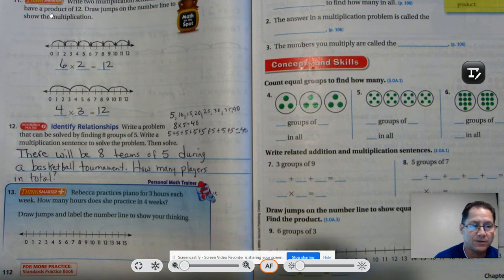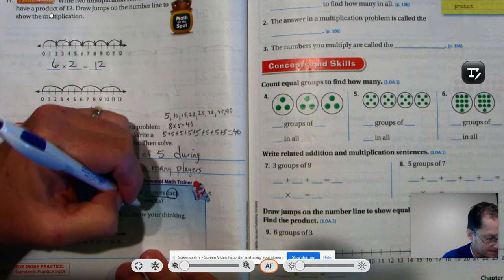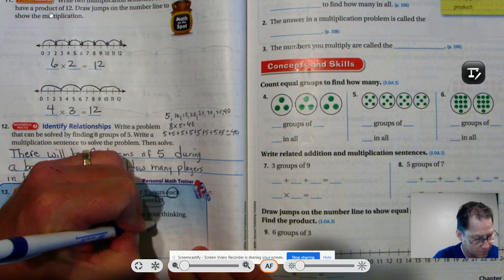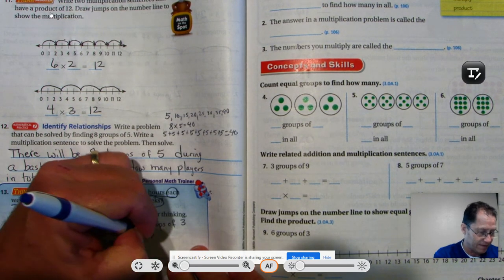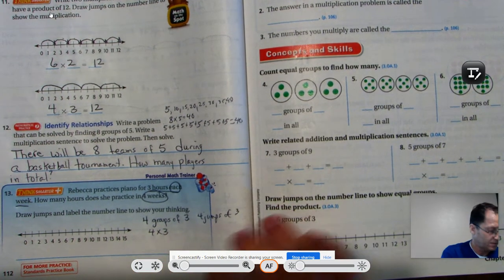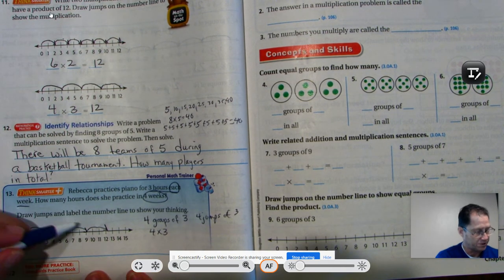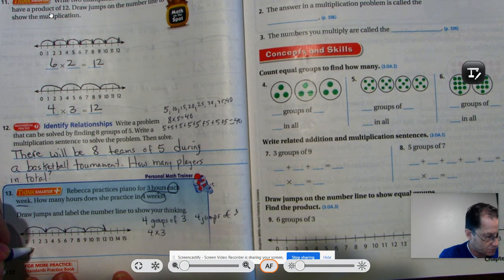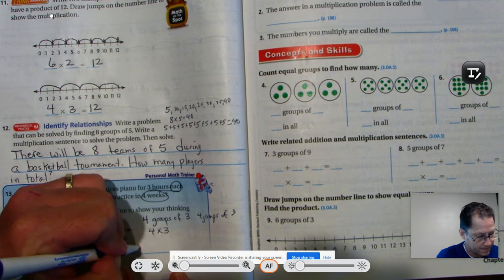Number 13. Rebecca practices piano for 3 hours each week. How many hours did she practice in 4 weeks? So the 4 weeks is our groups here. So we're going to say 4 groups of what? In every week there are 3 hours. So 4 groups of 3 is the same as saying 4 times 3. And it's also the same as saying 4 jumps of 3. So 4 jumps of 3: 1 jump, 2 jumps, 3 jumps, 4 jumps. Every jump has 3. So there are 12 hours of practice in 4 weeks.